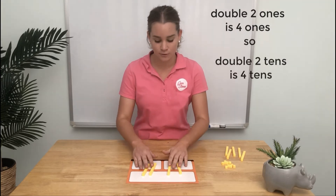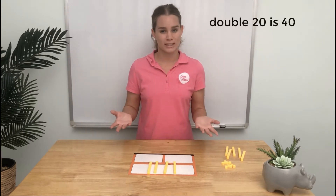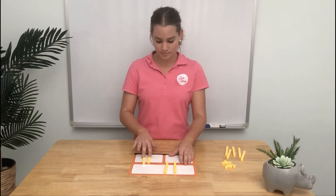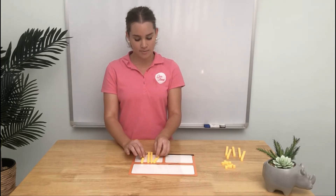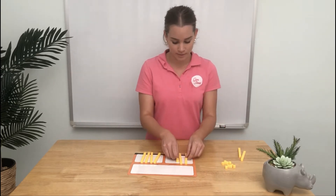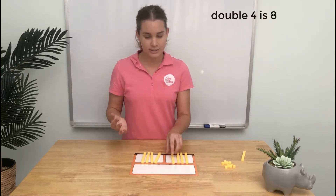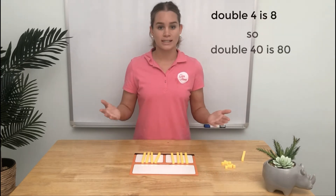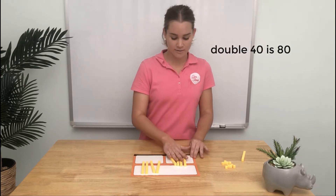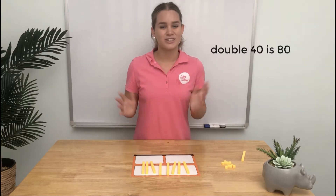Which is 40. Double 20 is 40. Let's try another one. How about double 40? We know double 4 is 8, so double 40 is 80. Double 40 is 80.